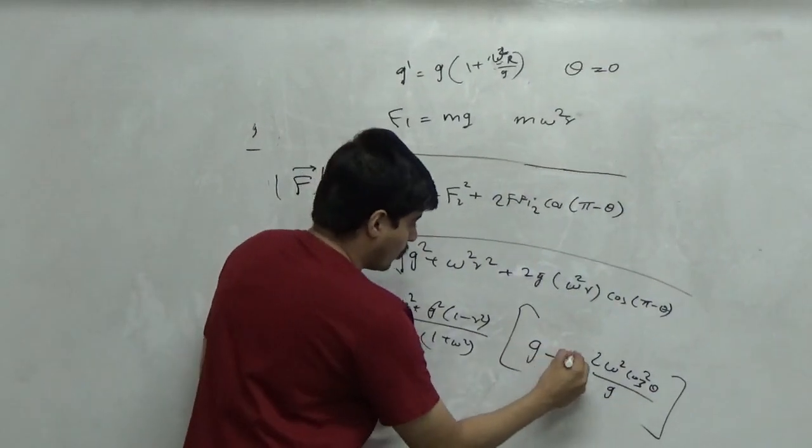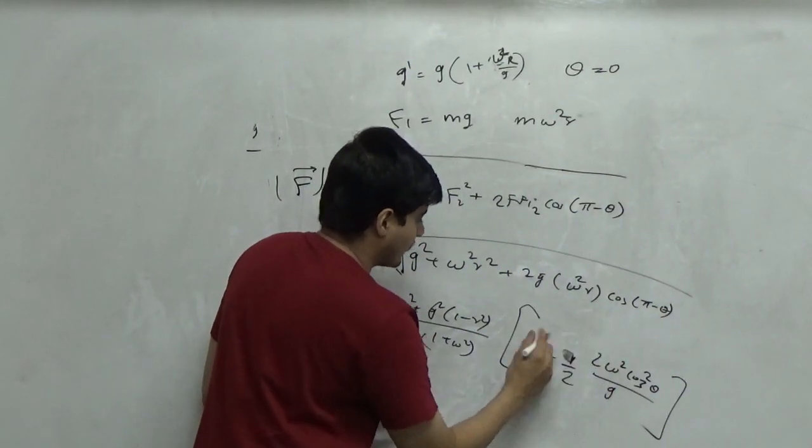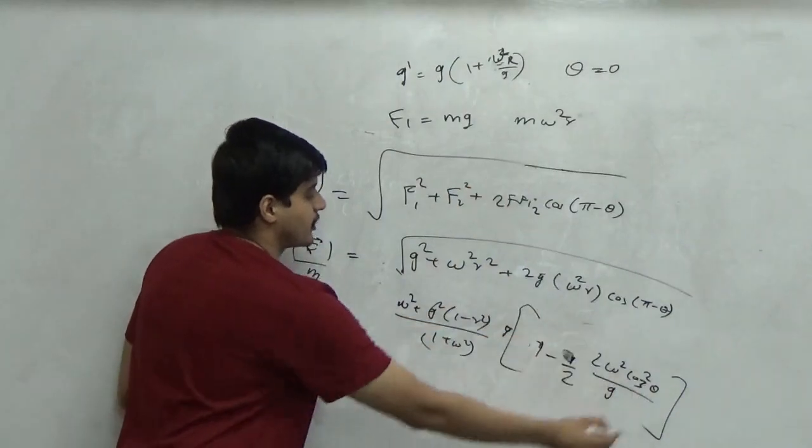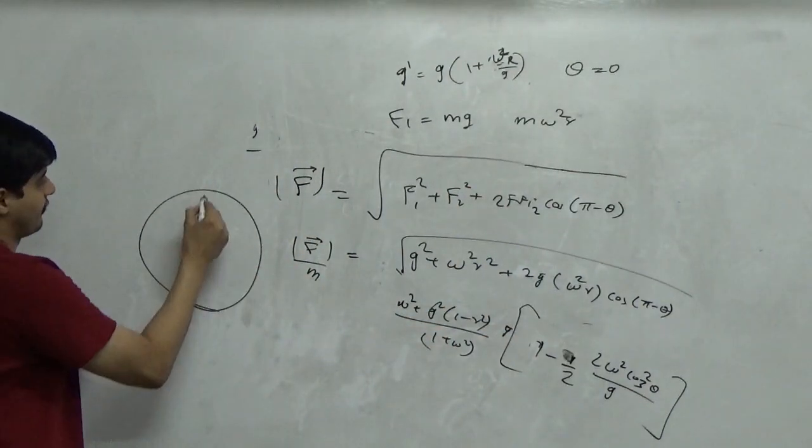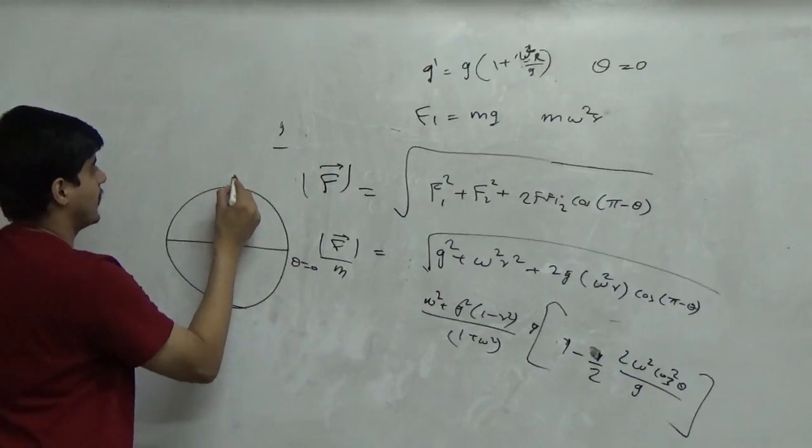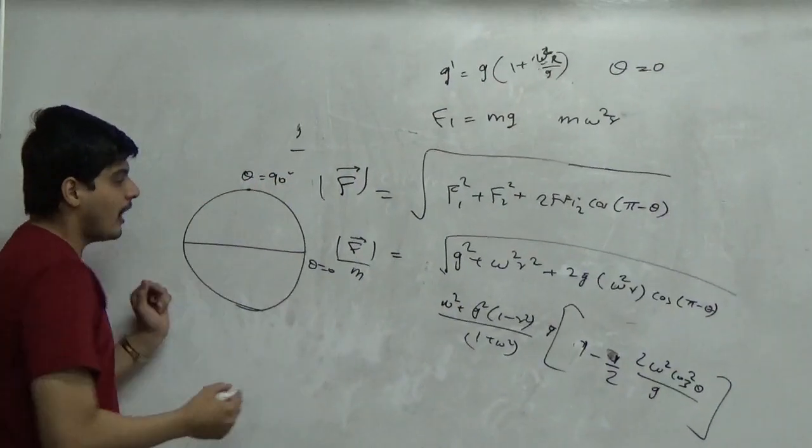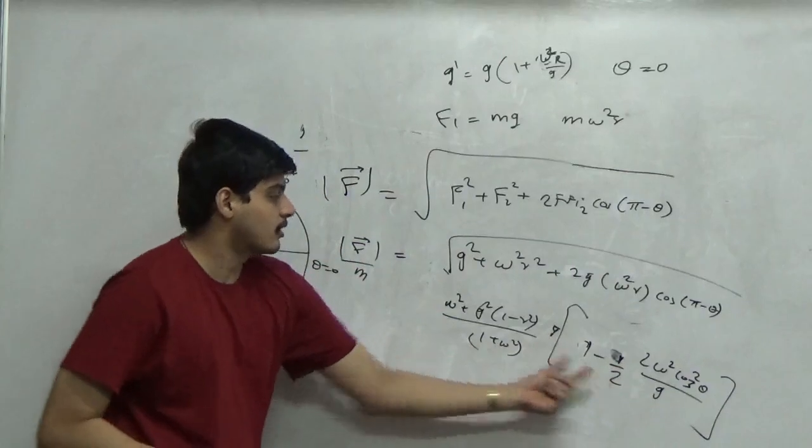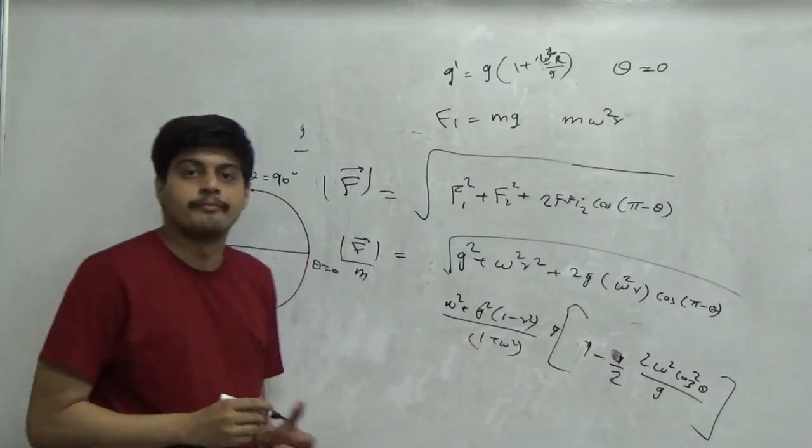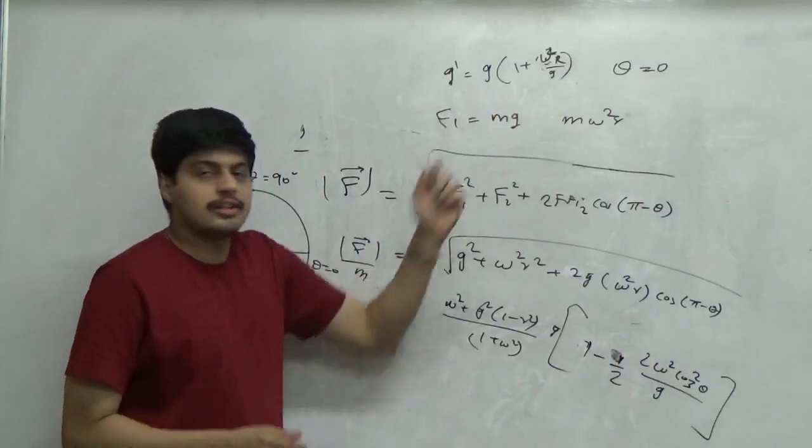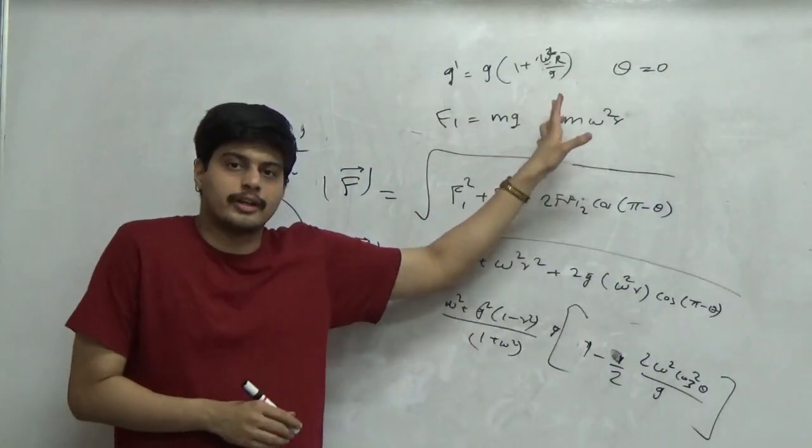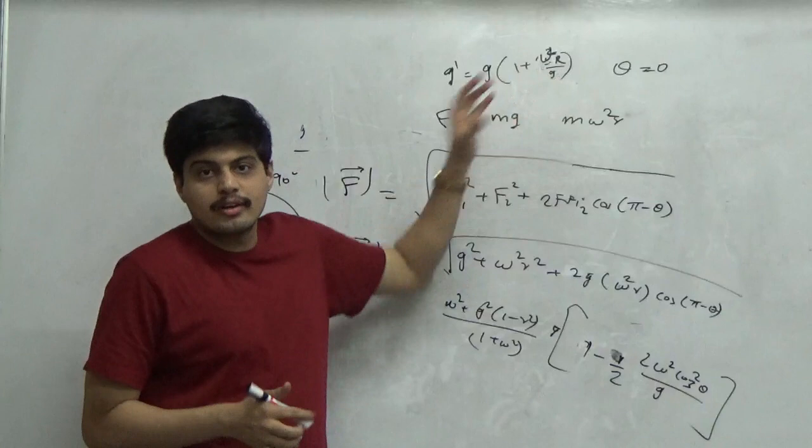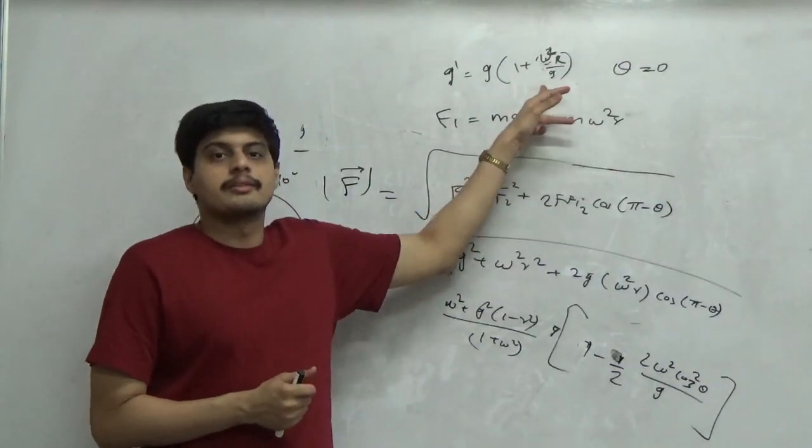Now at theta equal to 90 degrees, this entire term vanishes. Which means if this is my earth with the equatorial plane, at the equator you get an additional component of centrifugal force. Because earth is rotating, you will always experience slightly more gravitational acceleration.